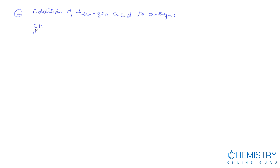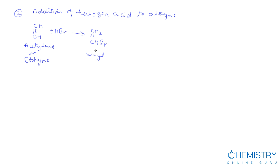Another example involves acetylene, which is a symmetrical alkyne. When HBr reacts with acetylene — whose IUPAC name is ethyne — we get vinyl bromide: CH2=CHBr. This product is now an unsymmetrical alkene, so the second addition of HBr takes place according to the MK rule, with the negative part going to the carbon with the lesser number of hydrogen atoms.